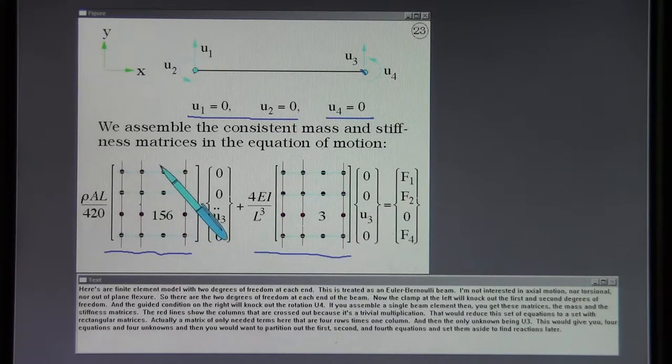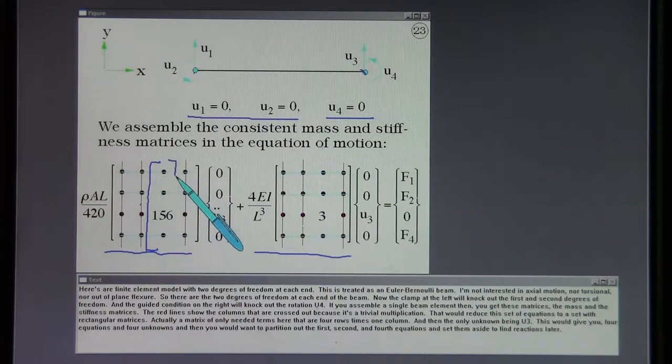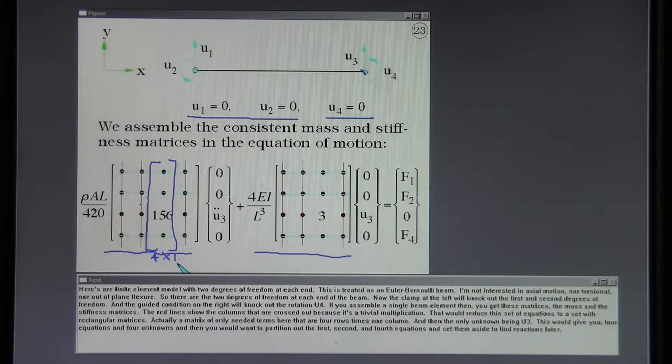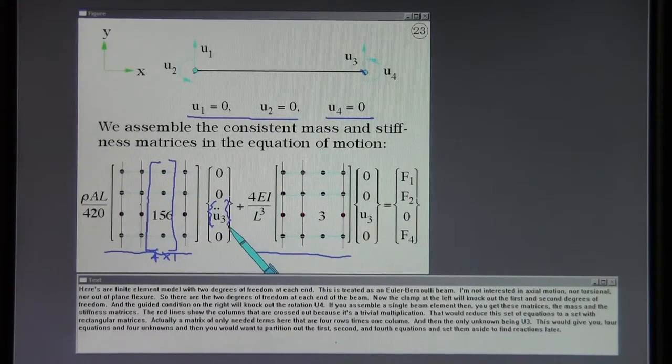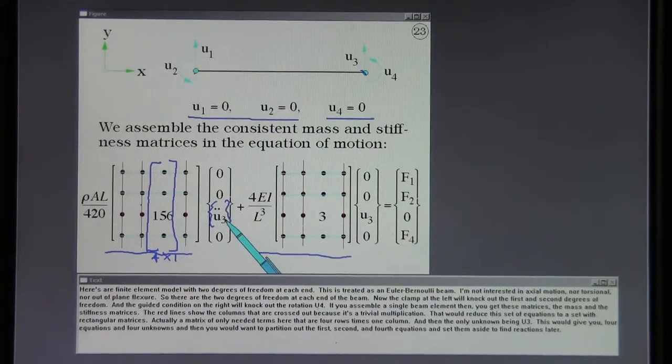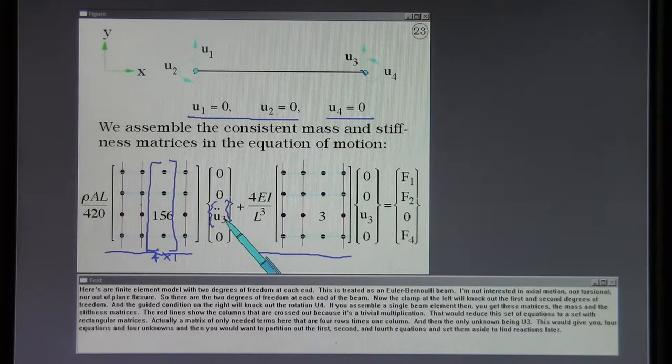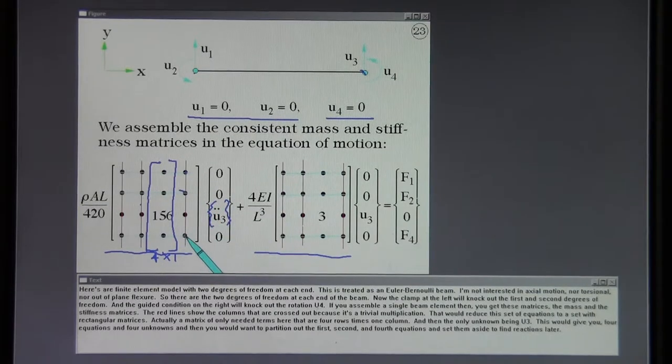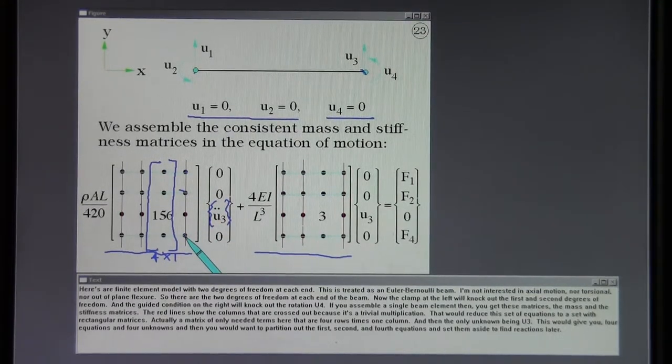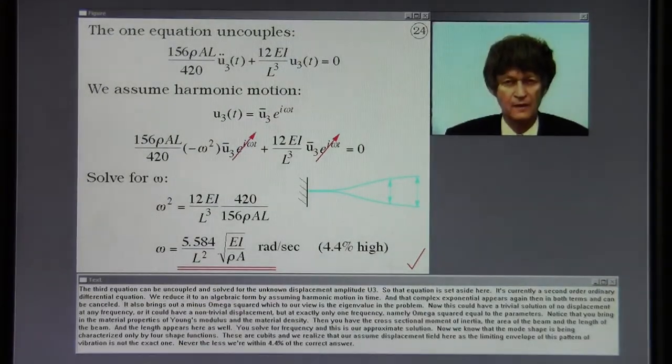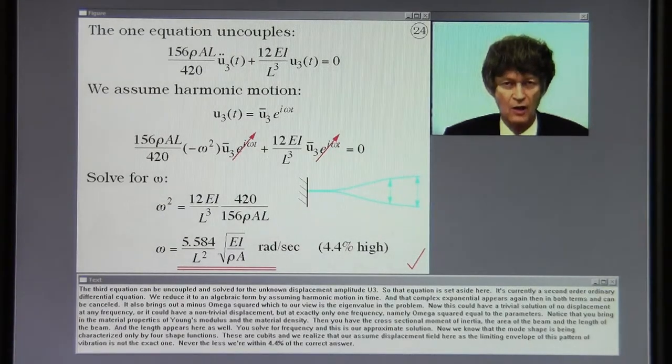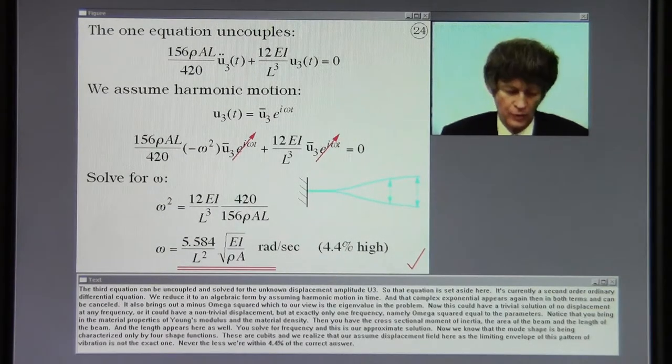That would reduce this set of equations to a set with rectangular matrices. Actually a matrix that only needed terms here that are four rows times one column and then the only unknown being U3. This would give you four equations and four unknowns and then you would want to partition out the first, second, and fourth equations and set them aside to find reactions later.